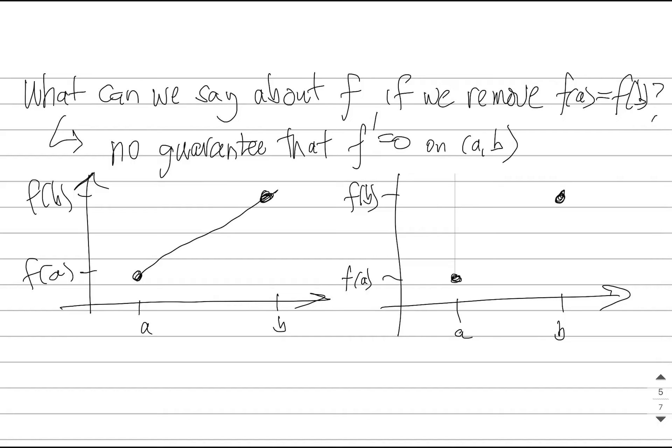We talked about Rolle's theorem, and if we are given those three conditions on a function, it will guarantee that we've got the derivative equal to zero somewhere on the interval. What if we get rid of one of those conditions? What if we get rid of that last condition, f(a) equals f(b)? What if the endpoints are no longer the same height? What can we say about the function then?